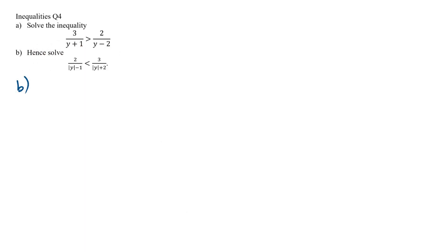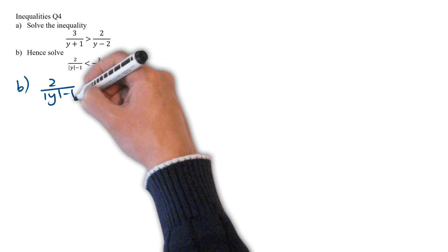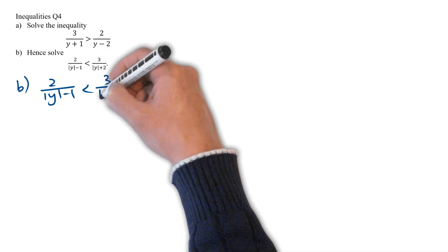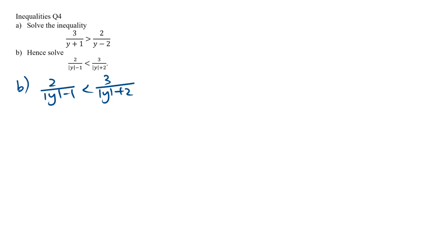In part B, we have to solve the inequality of 2 over modulus y minus 1, less than 3 over modulus y plus 2. And this is a hence question, which means we need to make use of the inequality and its solution from part A. So now, we will need to find out a link between the 2 inequalities.